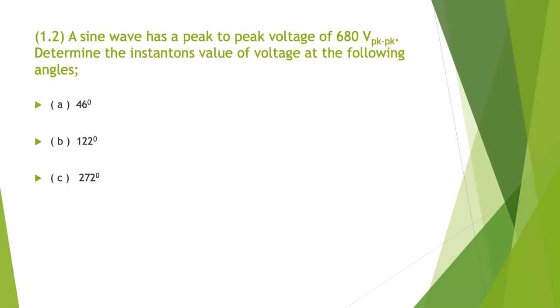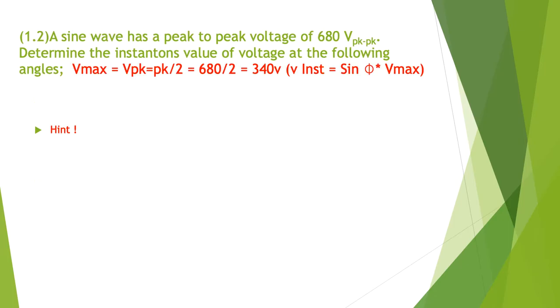Problem 1.2: A sine wave has a peak to peak voltage of 680 volts peak to peak. Determine the instantaneous value at each of the following angles. A little bit of a hint - in this particular case we've given you the peak to peak value, but the instantaneous value requires the max, which means we have to divide the volts peak to peak by 2. So peak to peak divided by 2, 680 divided by 2, gives us a Vmax of 340. To get the instantaneous value, it's always the sine of the angle multiplied by the Vmax.